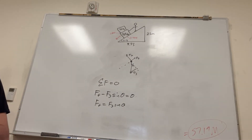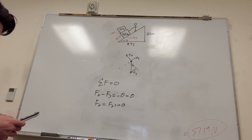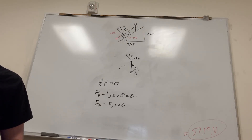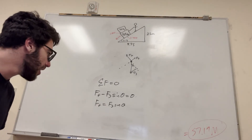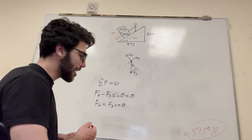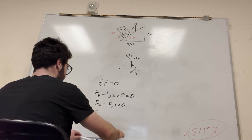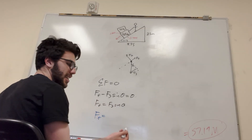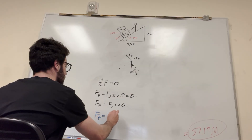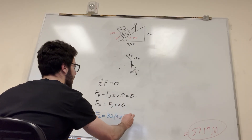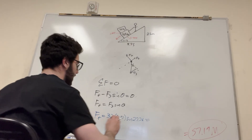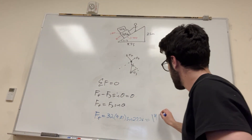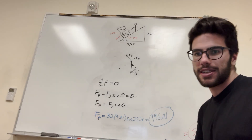We found this earlier, so let's plug it in. But this time it's only the upper box, so force of gravity uses mass of 32 kilograms. Force of friction equals mass times g times sine of theta: 32 times 9.81 times sine of 27.76, which equals 146 newtons. That's the magnitude of the force on the upper box.